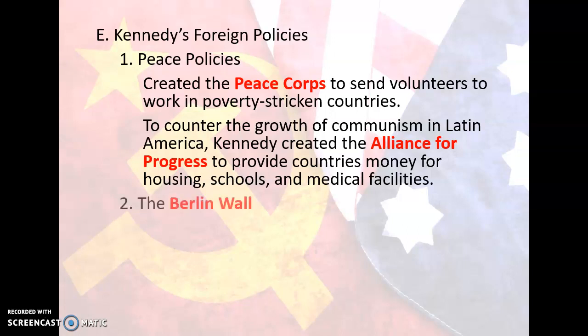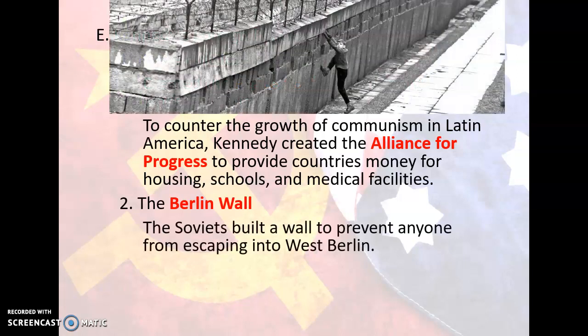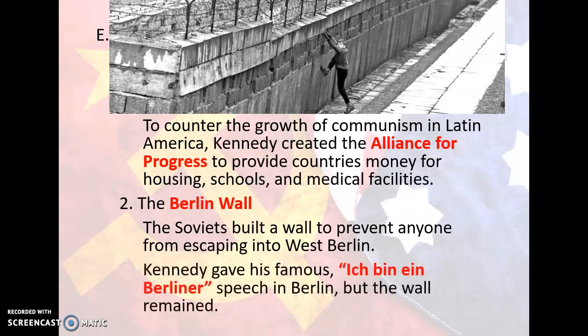Number two: The Berlin Wall. The Soviets, to solve their problems, built a wall to prevent anyone from escaping into West Berlin. Up to this time, thousands of East Germans under communism were escaping into the free city of West Berlin. In 1961, the Berlin Wall was constructed and guards were ordered to shoot anyone who tried to escape. It's kind of interesting how in the Soviet Union they build walls to keep people in, while in the U.S. they build walls to try to keep people out. Kennedy goes to Berlin and gives his famous Ich bin ein Berliner speech — but the wall remained.